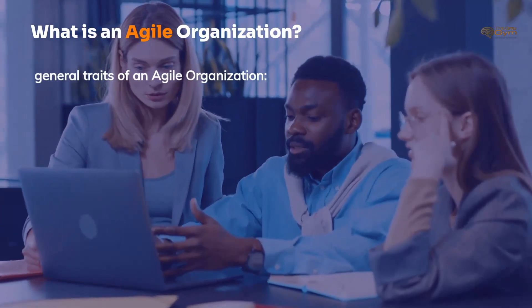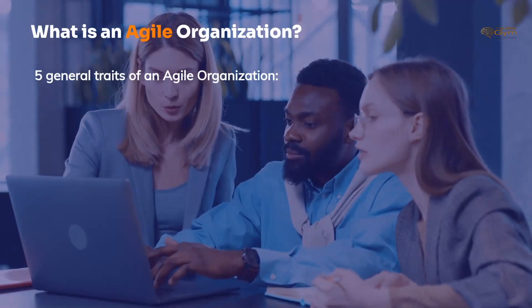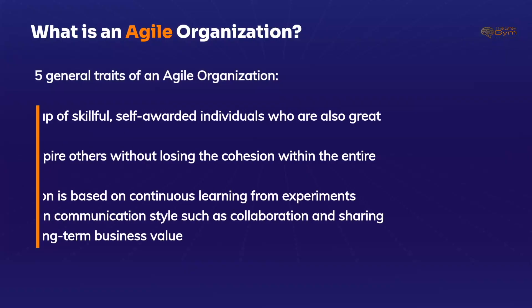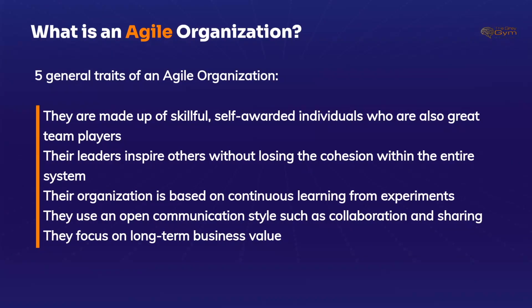Following are five general traits of an agile organization. They are made up of skillful, self-aware individuals who are also great team players. Their leaders inspire others without losing the cohesion within the entire system. Their organization is based on continuous learning from experiments. They use an open communication style such as collaboration and sharing. They focus on long-term business value.